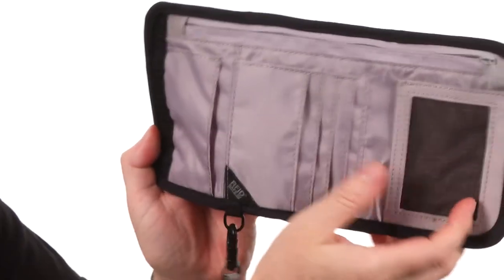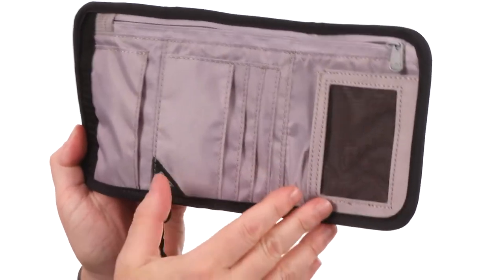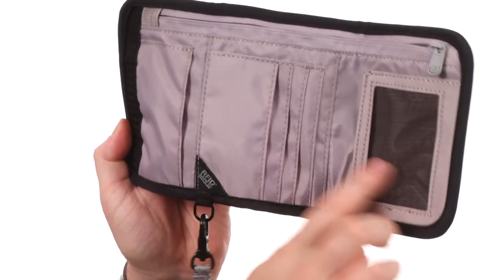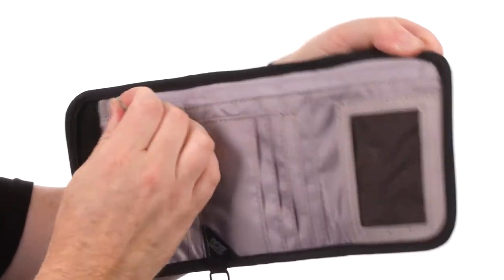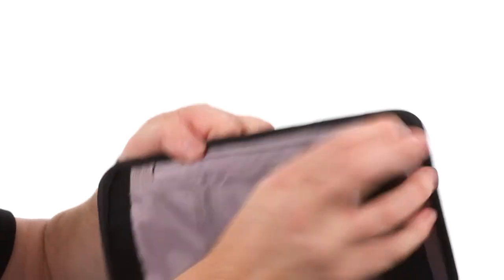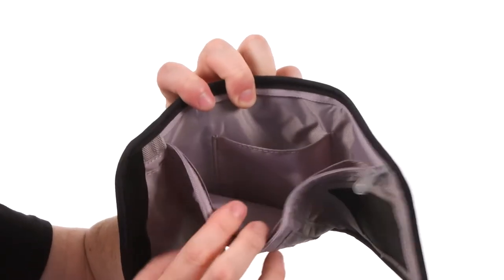On the interior, you've got all your card slots, an RFID protected pocket, and a mesh ID window. The currency compartment has a zipper pocket to keep everything secured. There's even a note pocket where you can stash your travel notes.